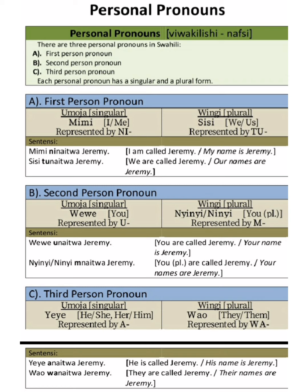When 'yeye' is in plural, it becomes 'wao,' meaning 'they' or 'them,' represented by 'wa.' For example: 'Wao wanaitwa Jeremi' — they are called Jeremi, their names are Jeremi. This topic covers all three personal pronouns with their singular and plural forms.